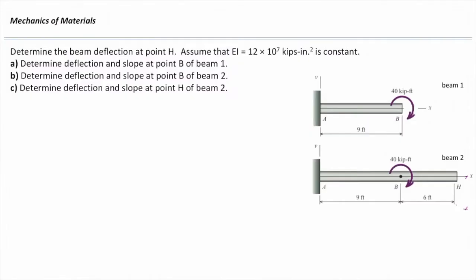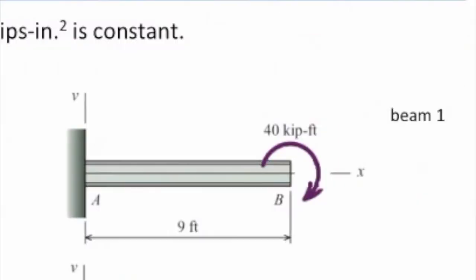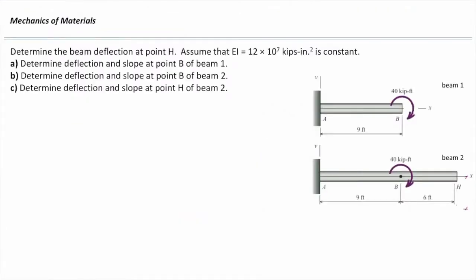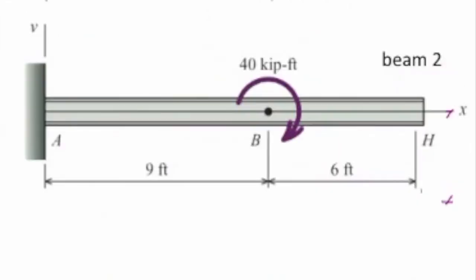The problem asks: determine the beam deflections at point H. Assume that EI is 12 times 10 to the 7th kips inch squared, and that's constant along the length of the beam. First, determine the deflection of the cantilever beam for beam number 1 at point B. Second, we extend that beam up to point H, and the problem asks how much is the deflection of beam number 2 at point B, then how much is the deflection of beam number 2 at point H.